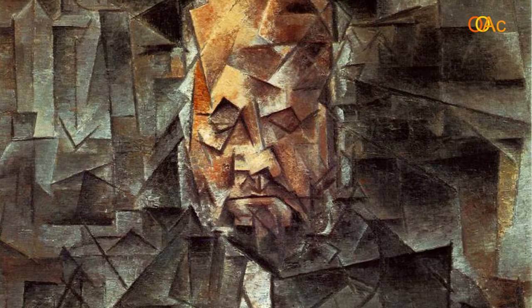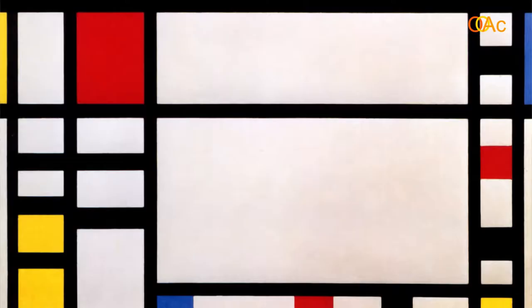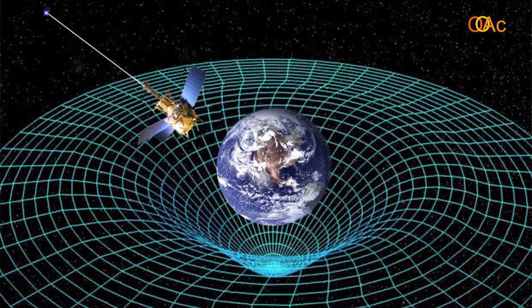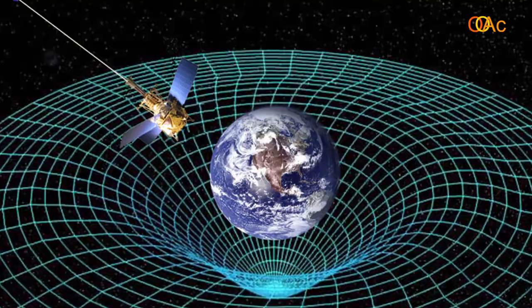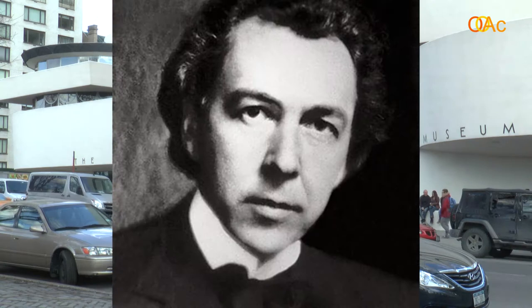We see relationships between his work and the cubism of Picasso, the abstraction of Mondrian, the stream of consciousness of Proust and Joyce, and the relativity of Einstein. And we associate Frank Lloyd Wright with organic architecture, which involved a deep integration of the building with its landscape.